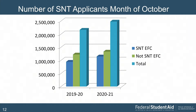Looking at the number of S&T applicants for the month of October, while we're receiving more applications to date for 2021, the numbers compared between 19-20 and 2021 seem relatively consistent. The number of students eligible for the S&T path has maintained.